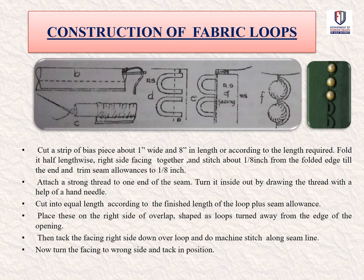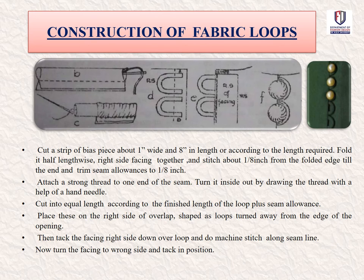To construct fabric loops, cut a strip of bias fabric about 1 inch wide and 8 inches long, or according to the length required. Fold it in half lengthwise, right sides together, and stitch about 1/8 inch from the folded edge; trim the seam allowance to 1/8 inch. Attach a strong thread to one end, then turn it inside out using a bodkin. Cut into equal lengths according to the finished length of the loop plus seam allowance. Place these on the right side of the overlap as loops turned away from the edge of the opening, then place the facing right side down over the loops and machine stitch along the seam line. Turn the facing to the wrong side and tack it in position.